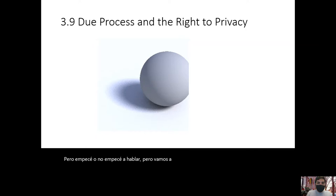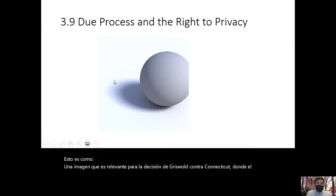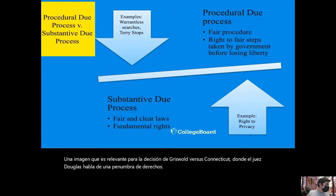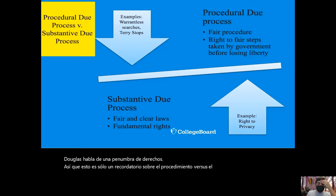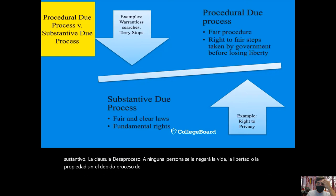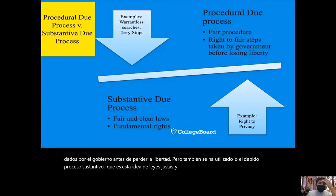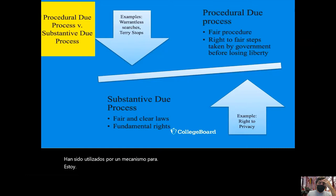This image is relevant to the Griswold versus Connecticut decision, where Justice Douglas talks about a penumbra of rights. As a reminder on procedural versus substantive due process: the due process clause — no person shall be denied of life, liberty, or property without due process of law — talks about fair procedure and the right to fair steps taken by the government before losing liberty. Substantive due process has been used as a mechanism to incorporate rights enumerated in the Bill of Rights, as well as rights inferred or not enumerated in the Bill of Rights but seen as fundamental rights, to apply to the states as well.